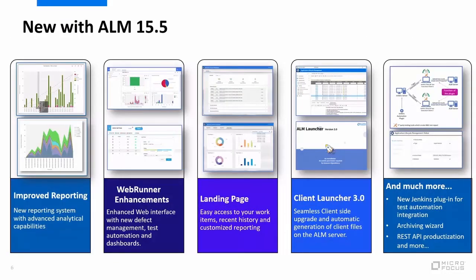In our latest release, ALM 15.5, we introduced a completely new reporting system, which improved reporting in aspects of usability and look and feel, and introduced new reporting types that help you perform advanced analytics on top of your data. ALM Web Runner was enhanced to include test automation, the ability to view ALM dashboards, and to conduct the full life cycle of defect management alongside the manual test execution which was already introduced with ALM 15. We have also introduced a new landing page for ALM, so now every user that logs in can immediately see all the work items assigned to them and check the history for easier navigation.